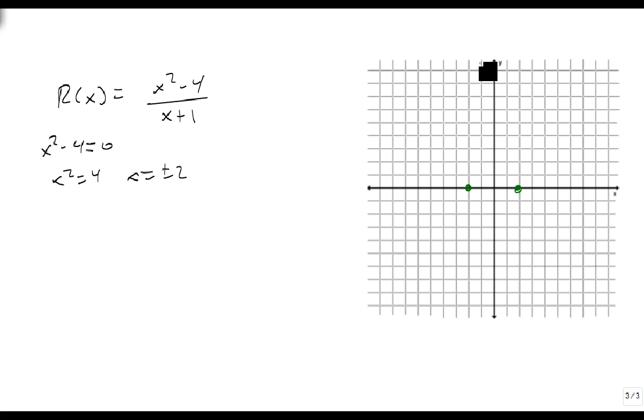We have a vertical asymptote at negative 1 because x can't be negative 1. We have a y-intercept at negative 4 because we get negative 4 over 1 when x is 0.